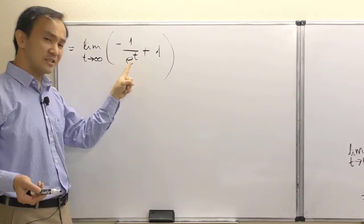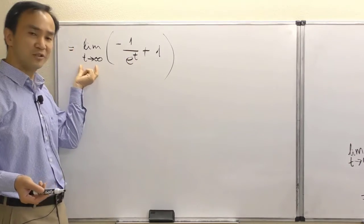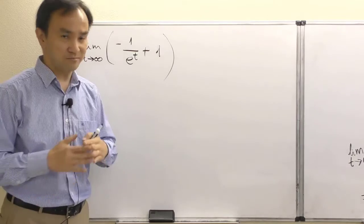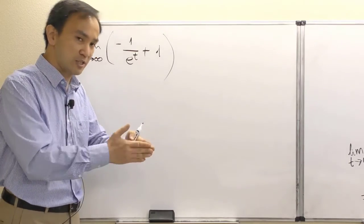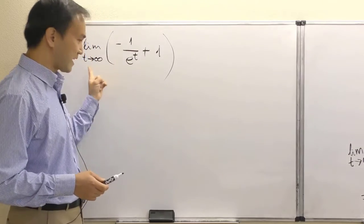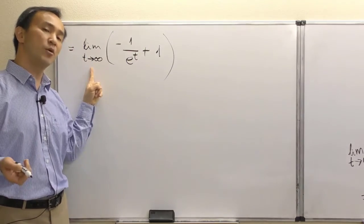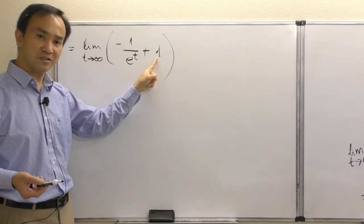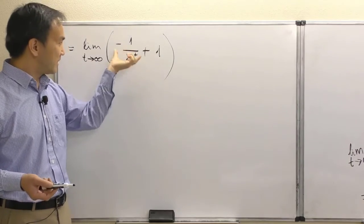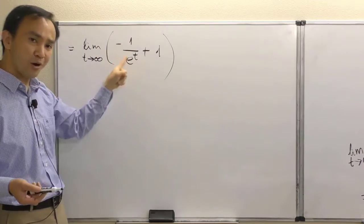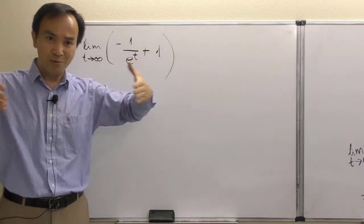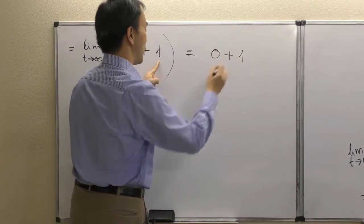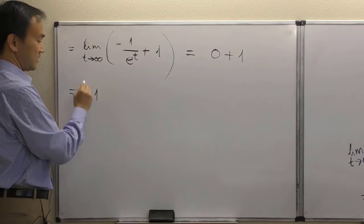Now we are ready to take the limit as t increases to positive infinity. We bring in our calculus one understanding of limits going to infinity. The second term is already a constant — it stays as one. The first term has a constant divided by a growing quantity, so as t goes to infinity, e to the t in the denominator grows, and that term goes to zero. Our final limit is one.